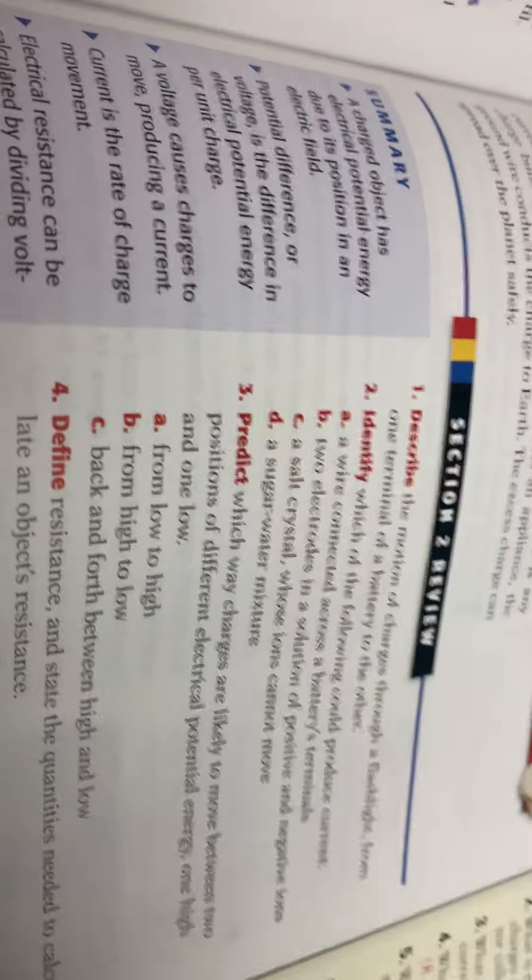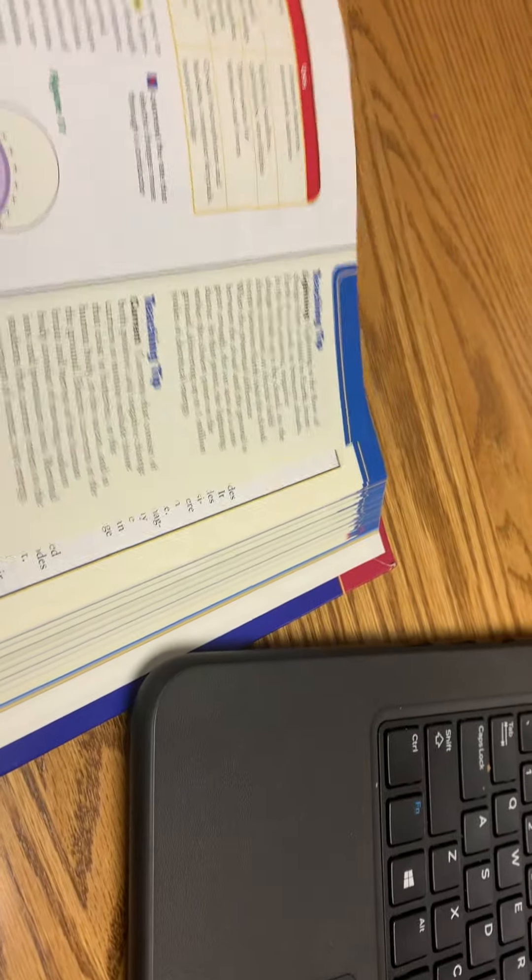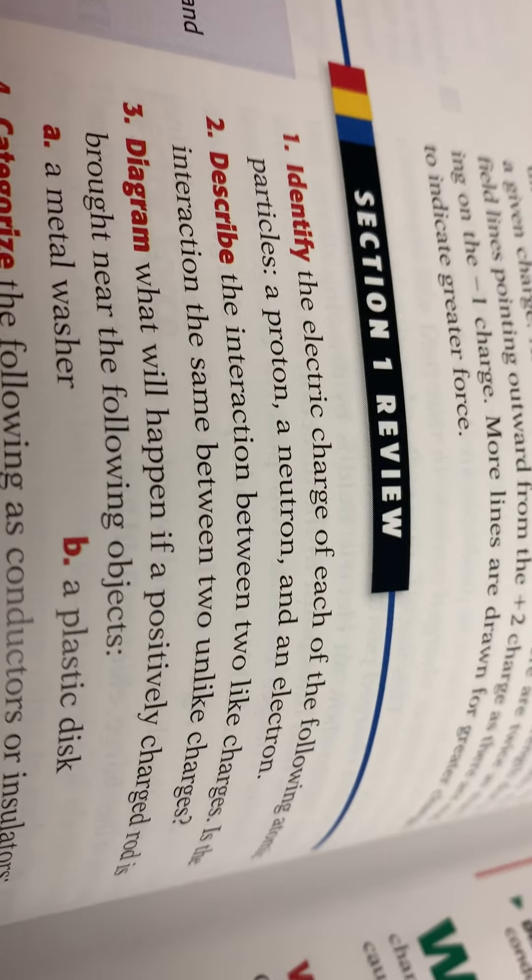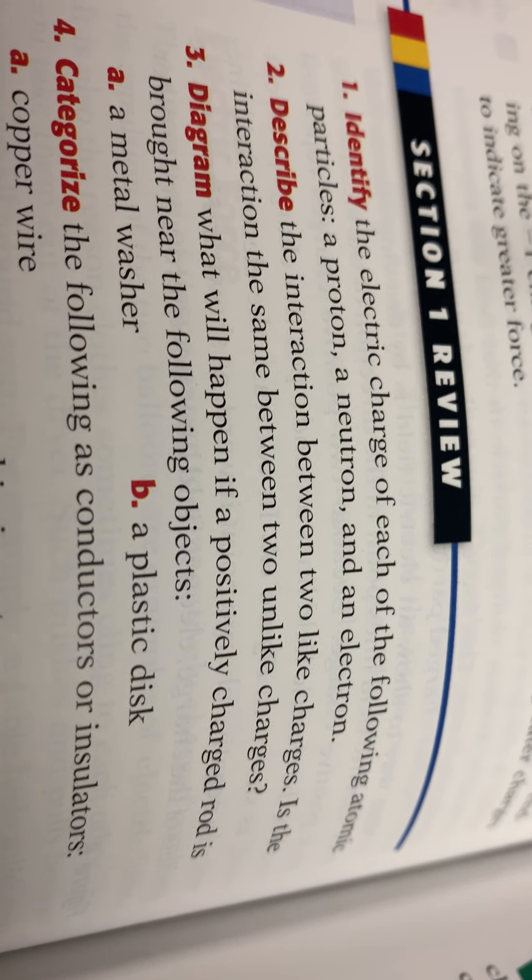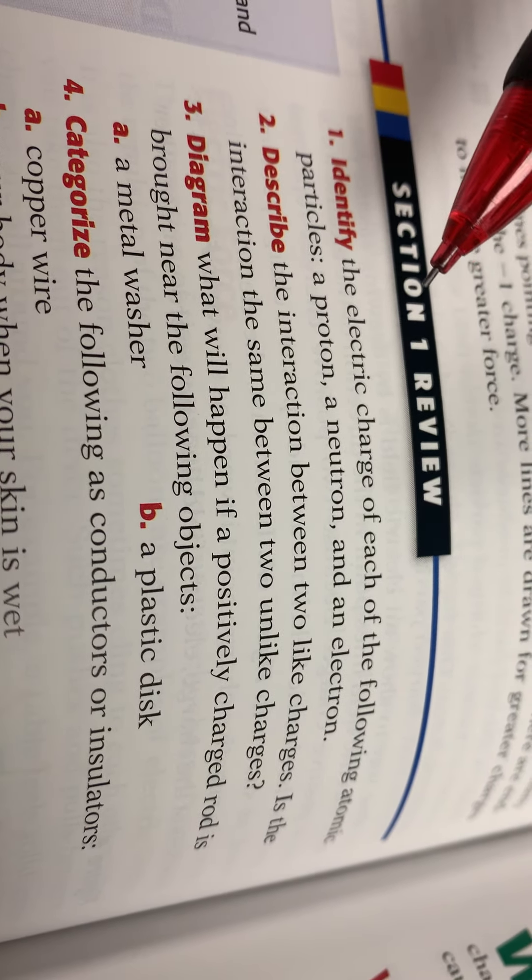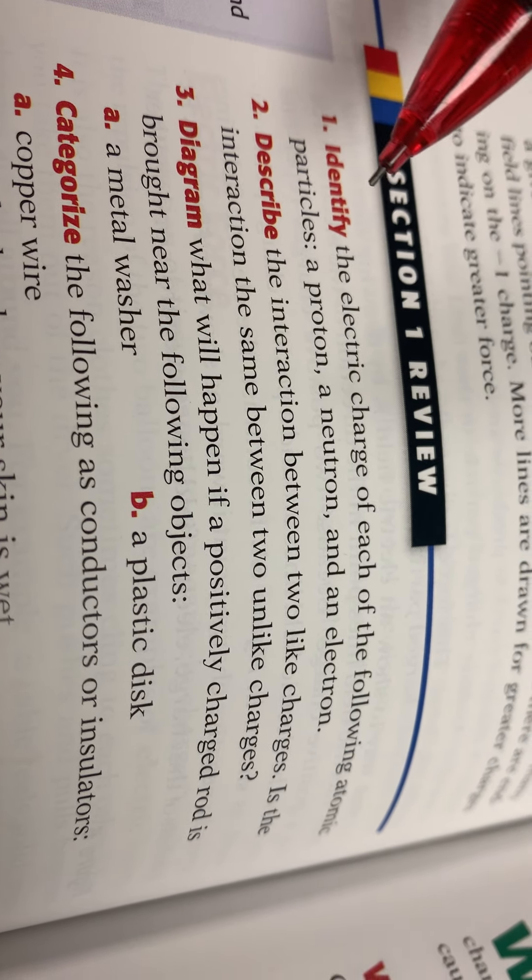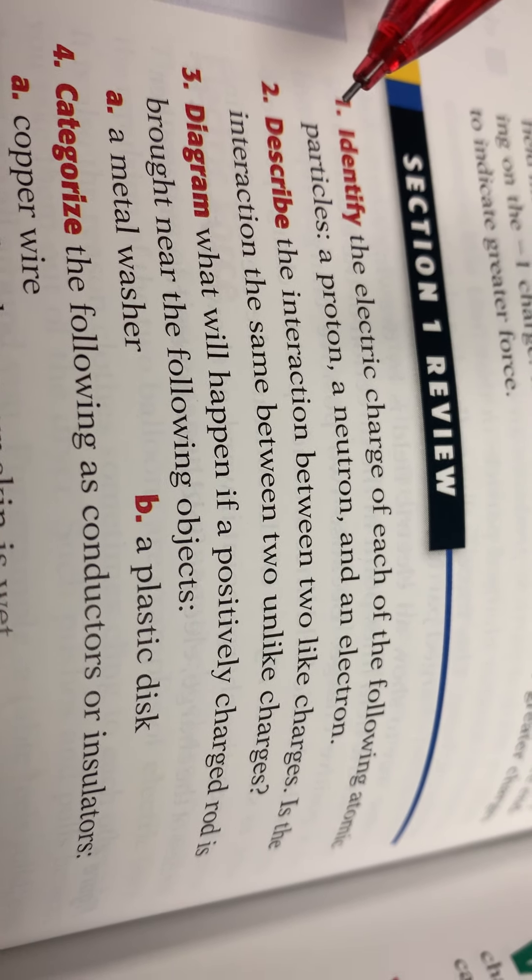All right, that's it for that section. Actually I skipped a section, let's go back to 536 now. We'll do numbers one through five there. Identify the electrical charge of the following: protons are positive, neutrons are neutral, electrons are negative. Describe the interaction between two charges: likes will repel, unlikes attract.